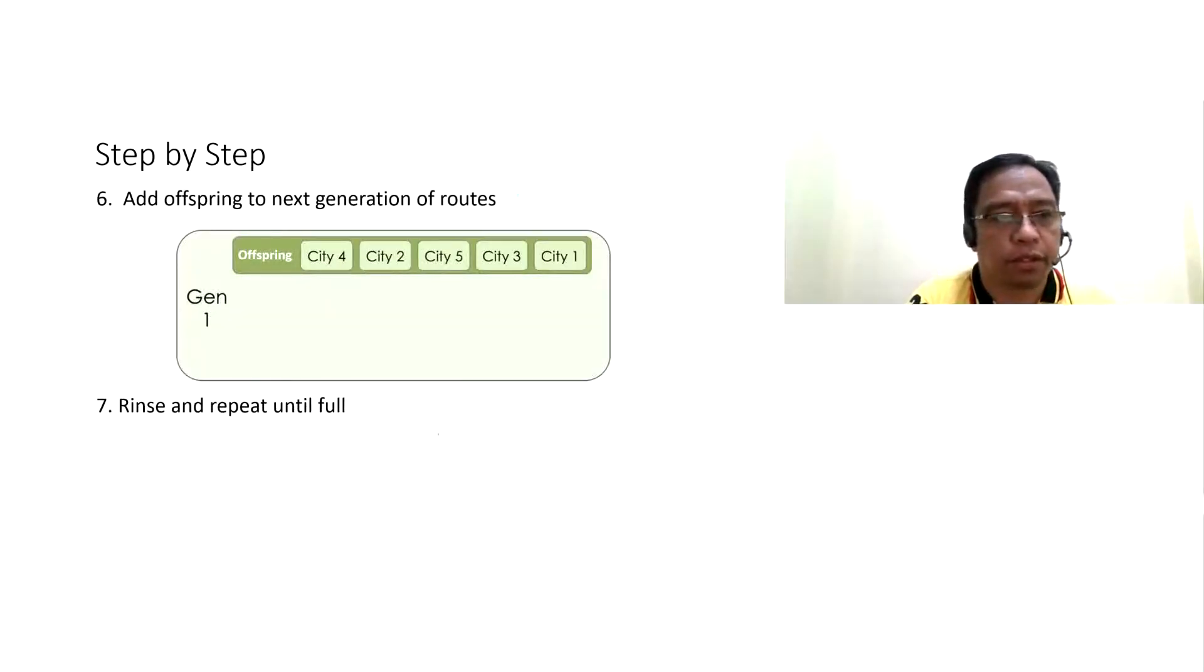Step number six, add offspring to the next generation of routes. Here, a new generation is created as the same size of the old ones. Then, step seven, rinse and repeat until full.